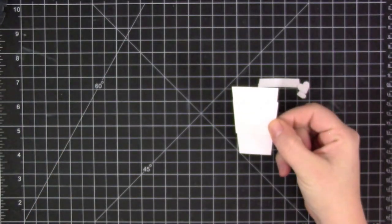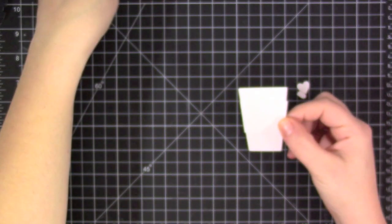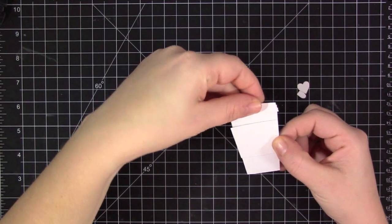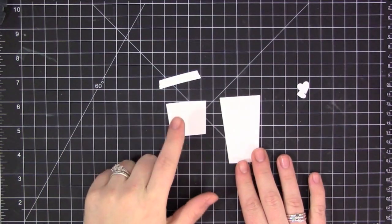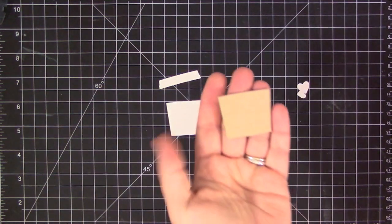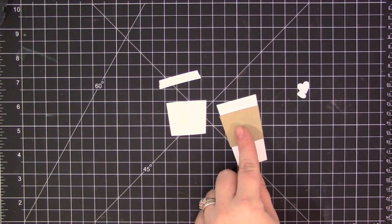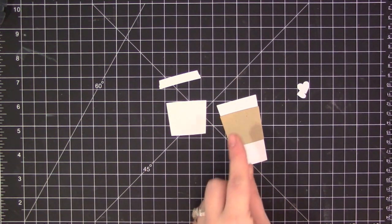I cut everything out of smooth white card stock, but I'm only going to be using the white for the base of the cup as well as the lid. To do the little sleeve that slides onto the cup, I'm going to cut that out a second time in kraft card stock, just so it looks kind of realistic since that's usually the color that most of them are.